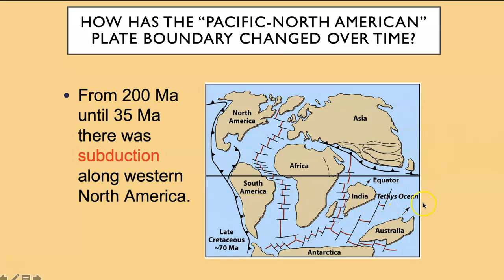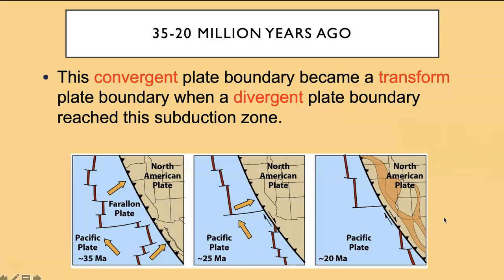This occurred until about 35 million years ago. There was a spreading center out in the Pacific Ocean between two plates called the Farallon and the Pacific Plate. When that spreading center reached the trench — because the whole thing was moving into the trench — that became unstable. Instead of having a spreading center, we started to have two triple junctions, one migrating north and one migrating south. Between them a transform boundary formed and lengthened over time to become what it is today — the transform boundary between the Pacific and North American plates in California.